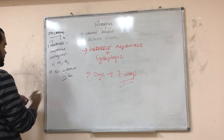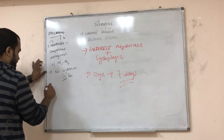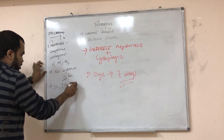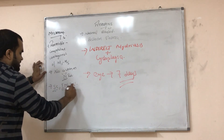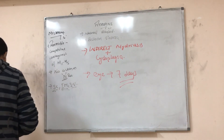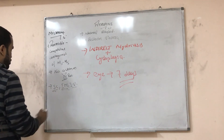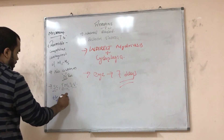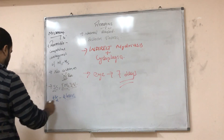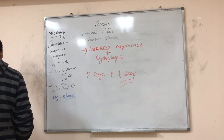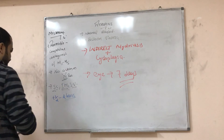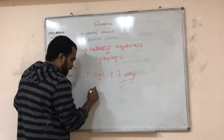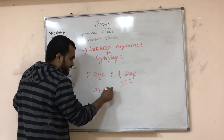Atropine can be given subcutaneously, IM, or IV. In terms of pharmacokinetics, the half-life is around two hours for atropine.